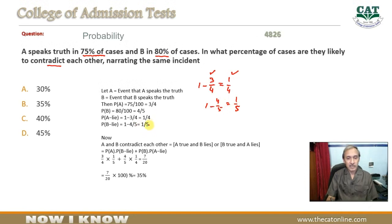Contradict karne ka kya matlab hai? A true ho aur B lies ho, ya phir B true ho aur A lie ho. Toh iske hum probabilities dekhte hain. A true ki probability 3 by 4 aur B lie ki probability 1 by 5. Aur kyun ki inke darmiyaan mein 'and' hai, isliye ye multiply ho gaye.